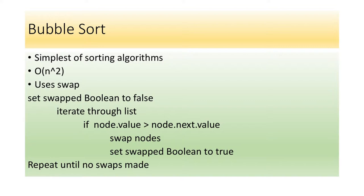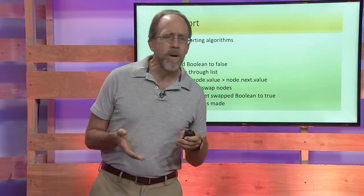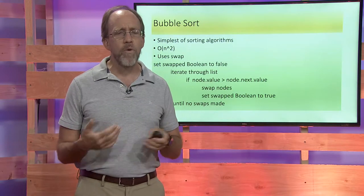Now, O of N squared, you may say, well, that's terrible because I've got ones that are much more efficient. But there are situations where the bubble sort is actually the most efficient algorithm. For example, if you're dealing with a sort where it's almost completely sorted, it may be only one or possibly two objects are out of order.